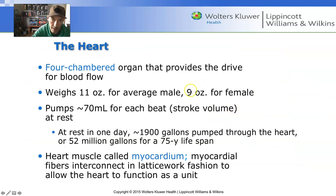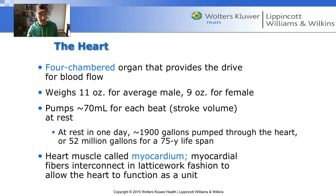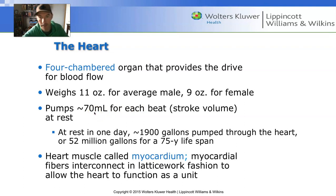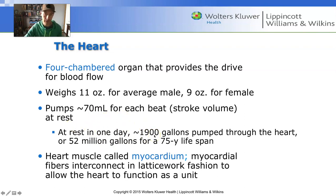The average heart weighs about 10 ounces. Males typically have slightly larger hearts because they have larger bodies, similar to how we discussed the lungs. The capacity on average is about 70 milliliters of blood per heartbeat. In one day, the heart pumps about 1,900 gallons of blood — you can visualize what a gallon of milk looks like, so that's 1,900 of those per day.